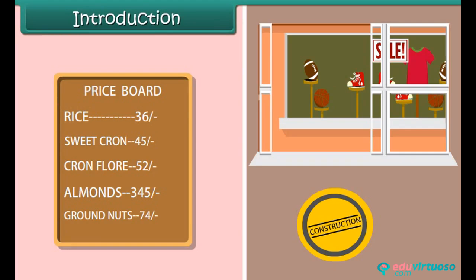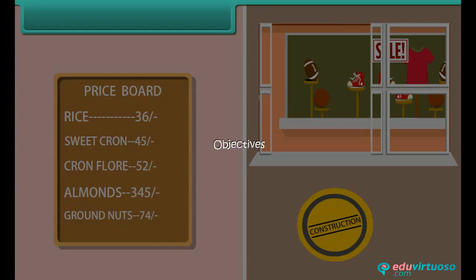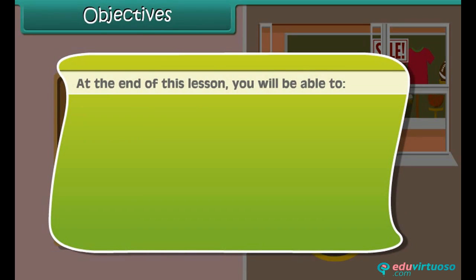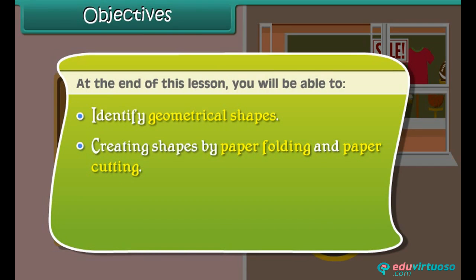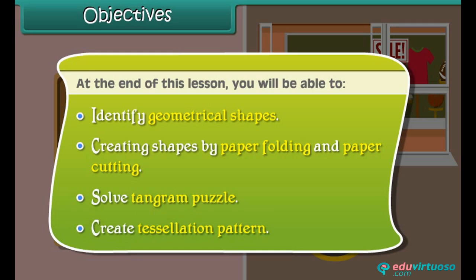Let us look at what he saw. He saw a rectangular billboard, a circle logo, and a rectangular window. Come, let's learn more about shapes. Objectives: At the end of this lesson, you'll be able to identify geometrical shapes, create shapes by paper folding and paper cutting, solve tangram puzzles, and create tessellation patterns.